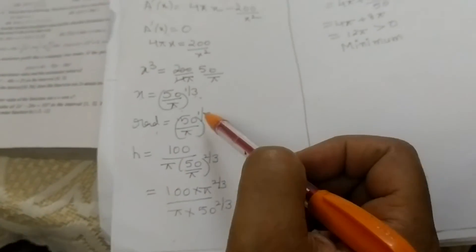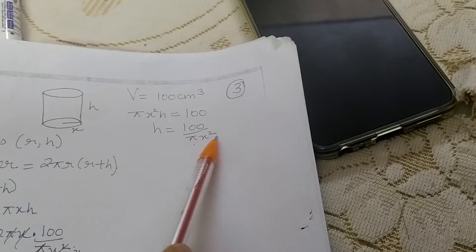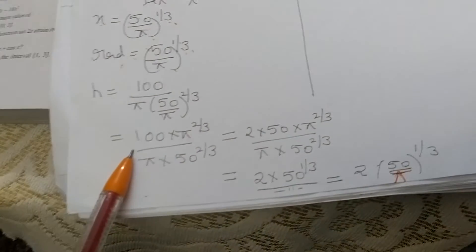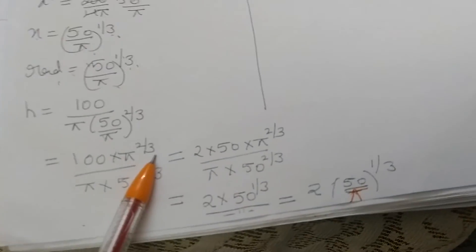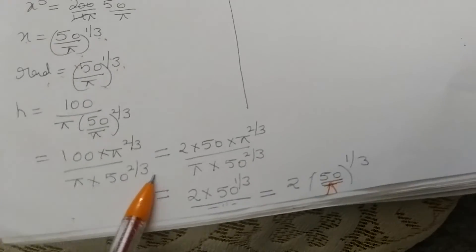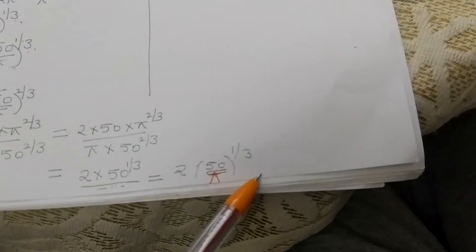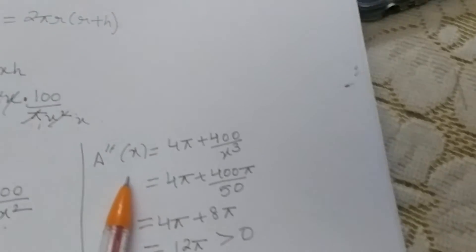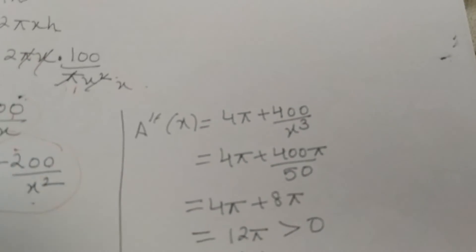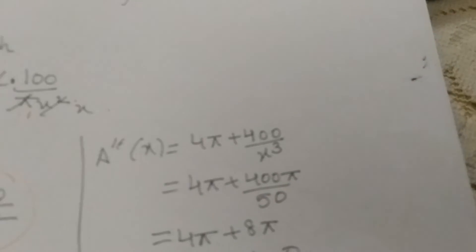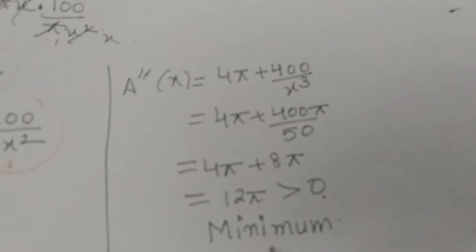So radius = (50/π)^(1/3). Substituting into h = 100 / (πx²): h = 100 / [π · (50/π)^(2/3)] = 2 · (50/π)^(1/3). So height = 2 · radius, confirming h = 2x. The double derivative is positive, so the surface area is minimum. I hope this is clear to all of you.